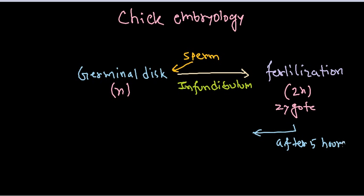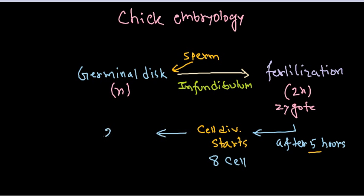After about 5 hours of zygote formation, cell division begins. During this time the volume-to-surface-area ratio changes and the cell is prepared for division. Once cell division starts, the zygote is actually migrating through the oviduct. It starts from about the 8-cell stage and can reach the 256-cell stage, so many rounds of cell division are going on.